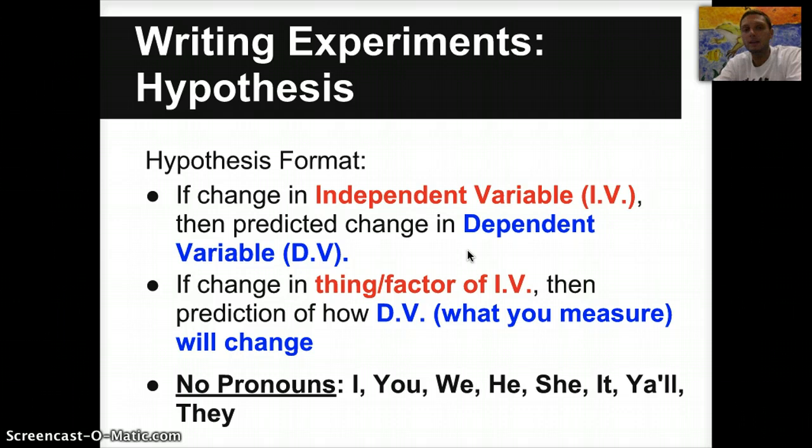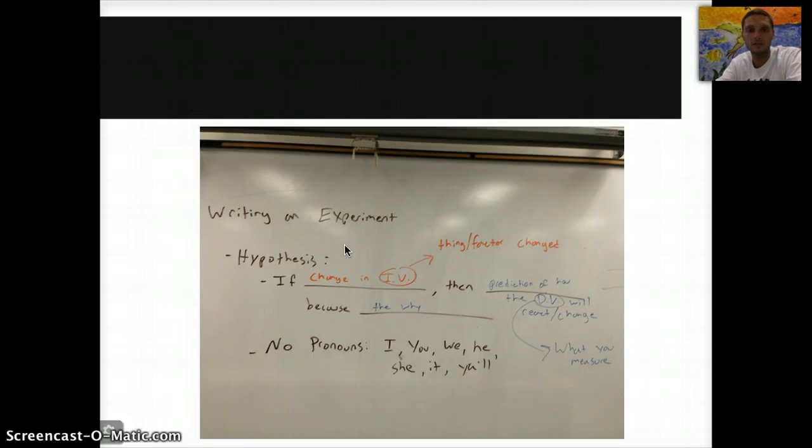And here's kind of another way to look at this: change in the thing or the factor of the independent variable, then the prediction of how the dependent variable, what you're going to measure, will change. So that's another way to look at it. When you're writing hypotheses, and I will always see these and it happens all the time, but do not include pronouns. I, you, we, he, she, it, y'all, they, don't include pronouns in your hypothesis. Structure a hypothesis in this format so that you don't include a pronoun. Never want to include pronouns in your hypothesis.